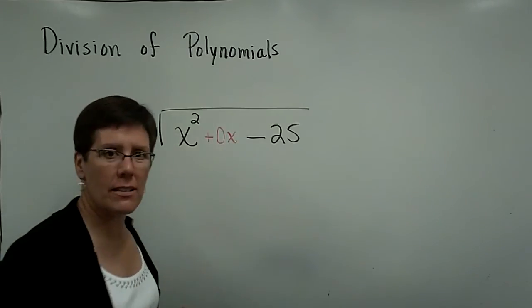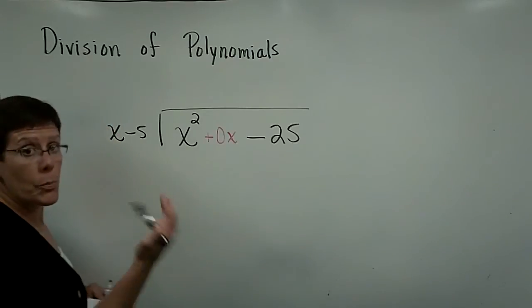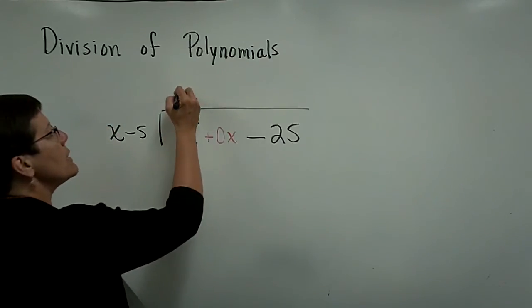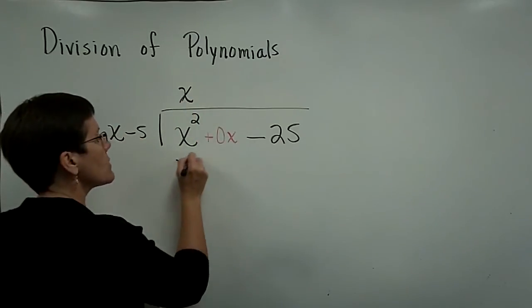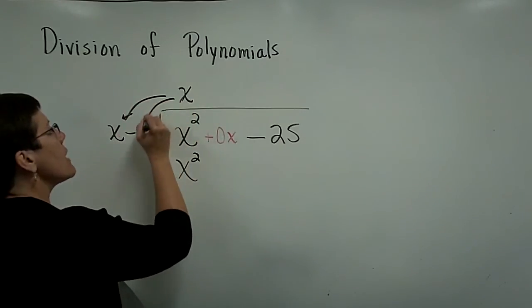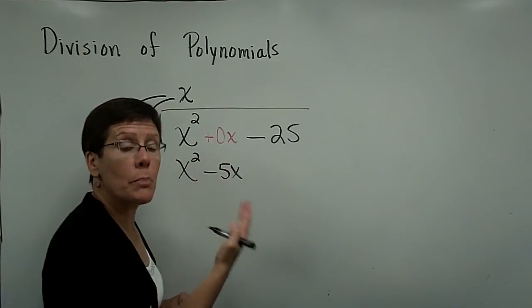So I need an x up here because x times x is this x squared. But this x times a minus 5 is a minus 5x. And it needed a place to go.